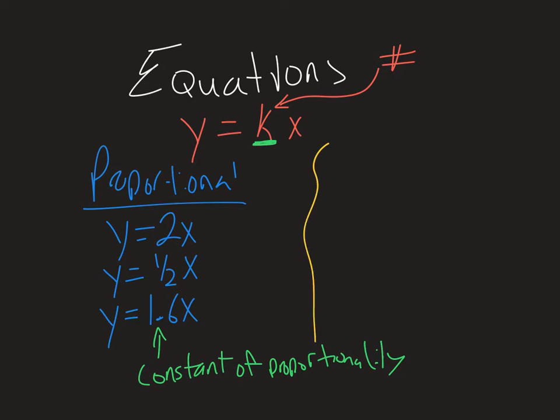Now some examples of non-proportional relationships would be, let's say we have y equals 2x plus 1. This plus 1 makes it to where that ratio is no longer maintained, that it differs depending on each value of x.